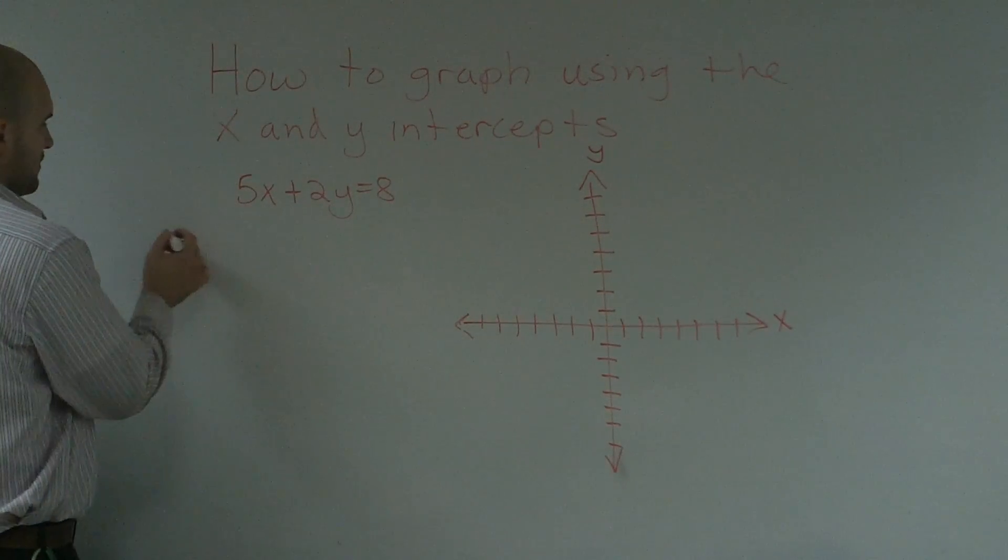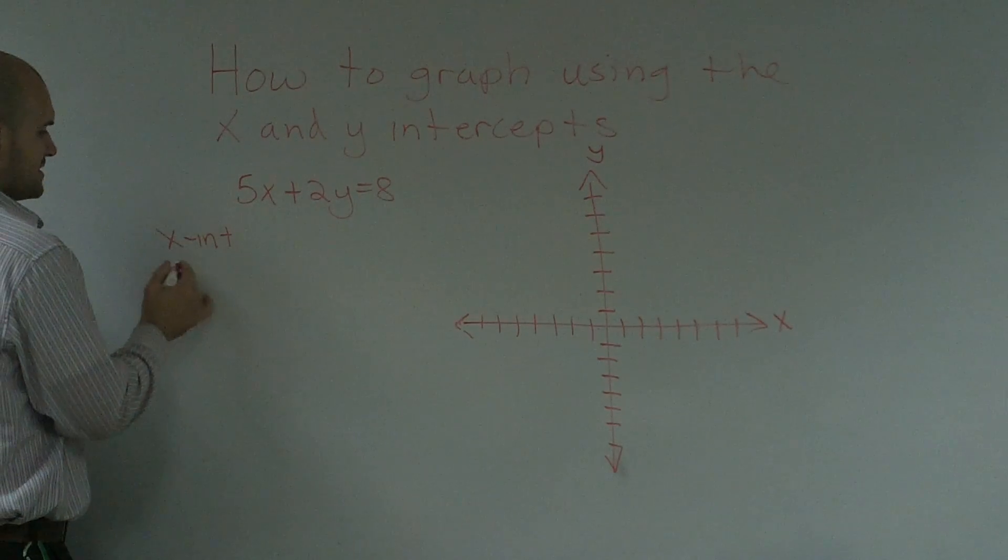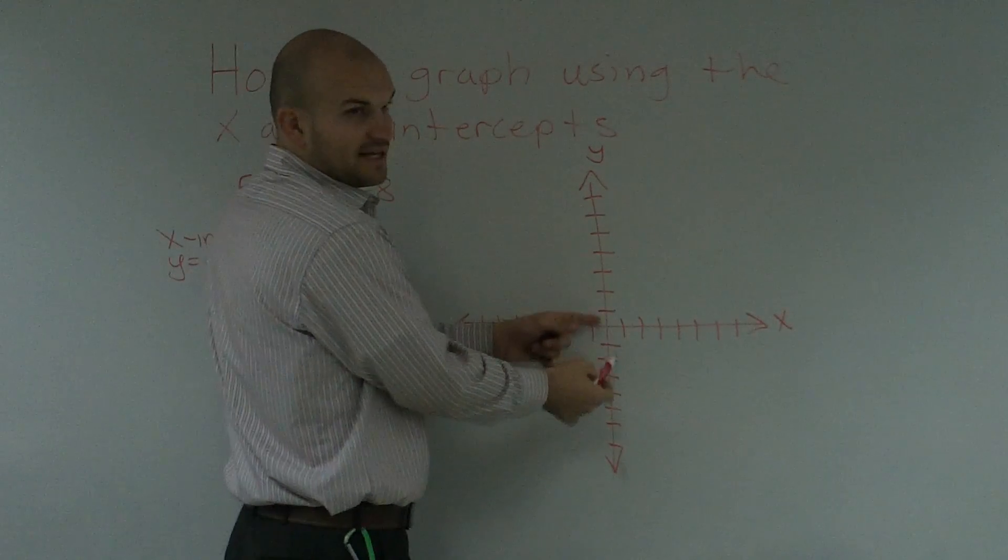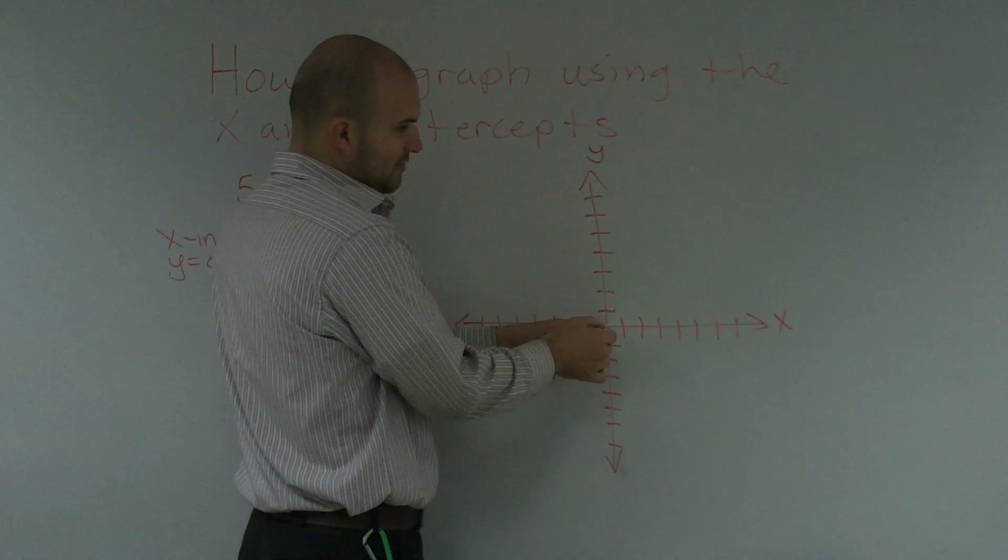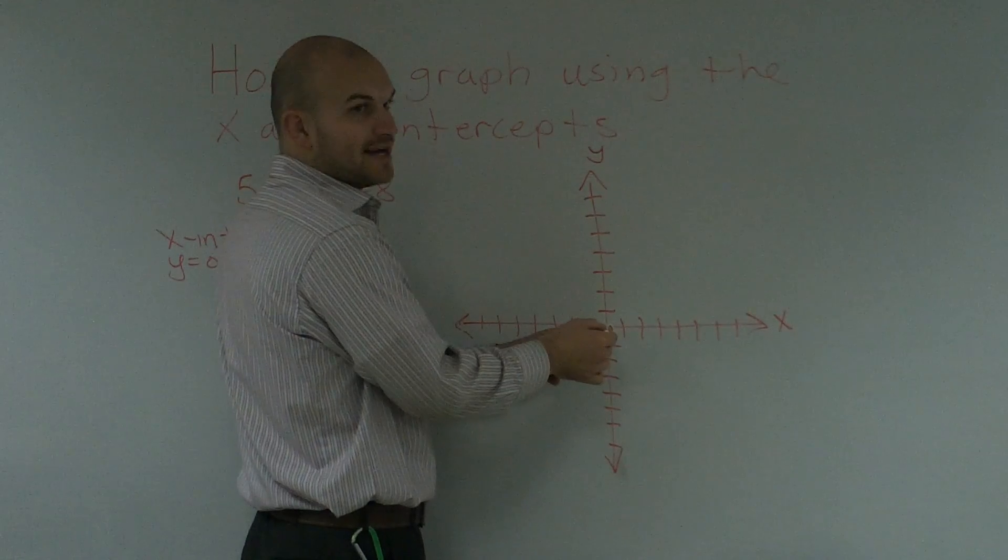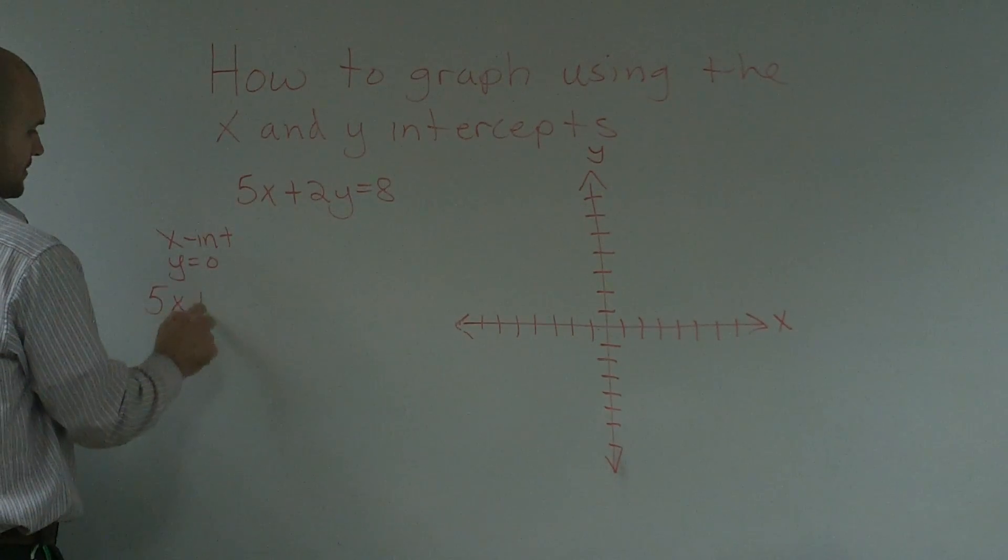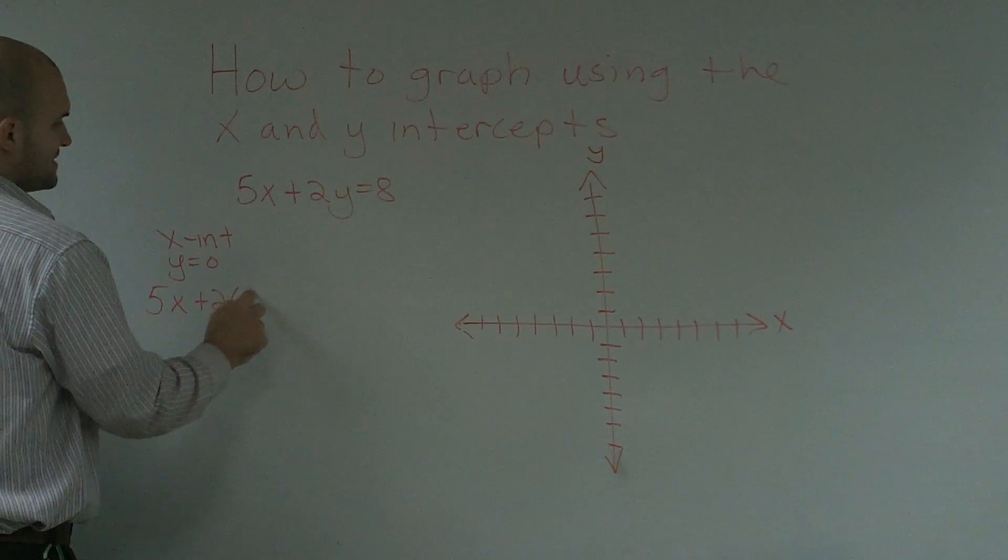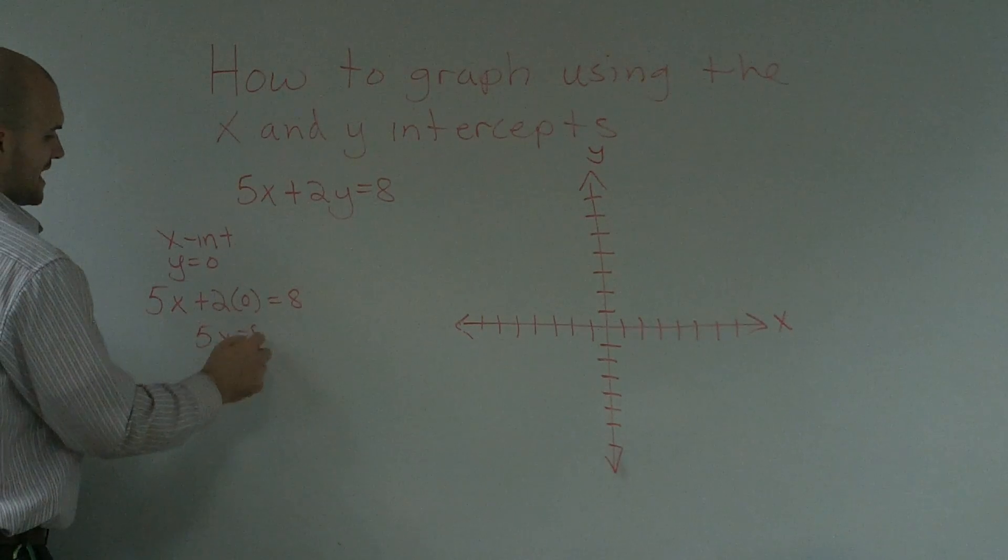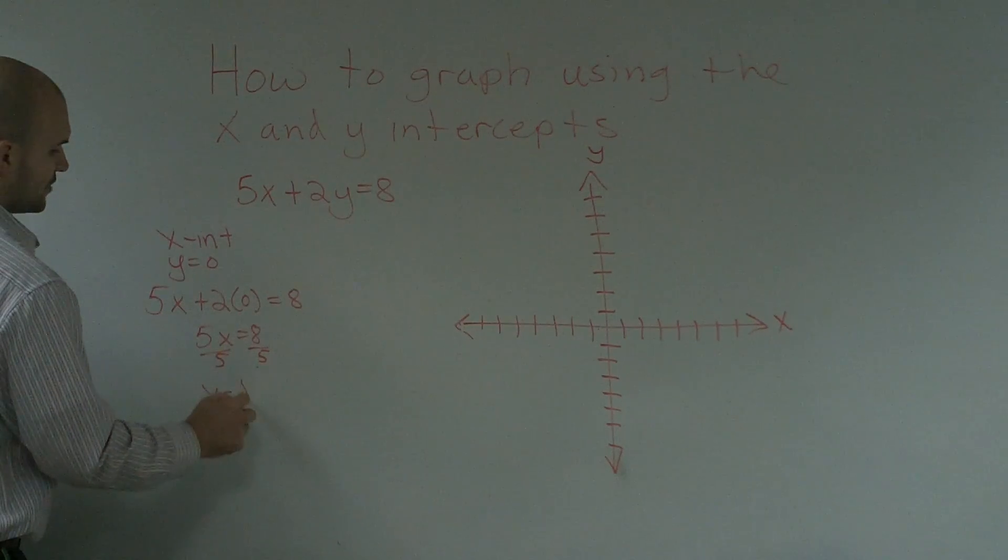So if I want to find out what the x-intercept is, that means where my graph crosses the x-axis, I'm going to say y is equal to zero. Because, remember, if you just think of this like a number line, at this point, which is where the x-intercept will lie, y does not have a value, so y is zero. So, x-intercept, all I'm going to do is plug zero into y. So I have 5x plus 2 times zero equals 8. Therefore, 5x equals 8. Divide by 5, x equals 8 fifths.